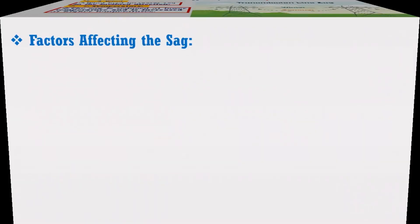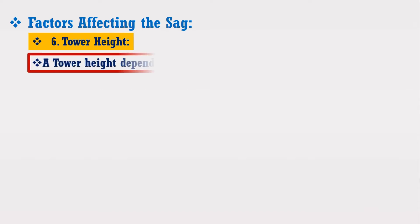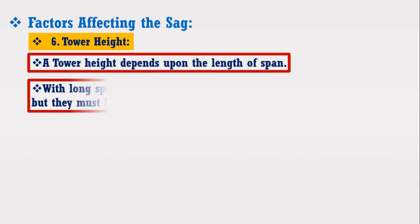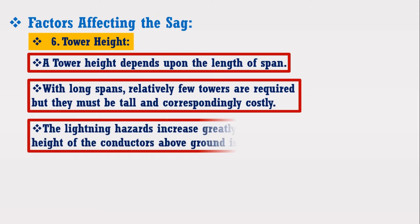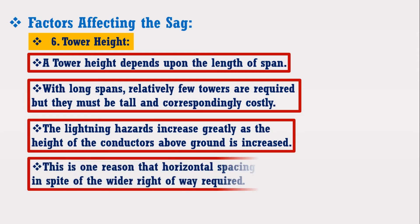6. Tower height: a tower's height depends upon the length of the span. With long spans, relatively few towers are required but they must be tall and correspondingly costly. The lightning hazard increases greatly as the height of the conductors above the ground is increased. This is one of the reasons that horizontal spacing is favoured in spite of the wider right-of-way required.